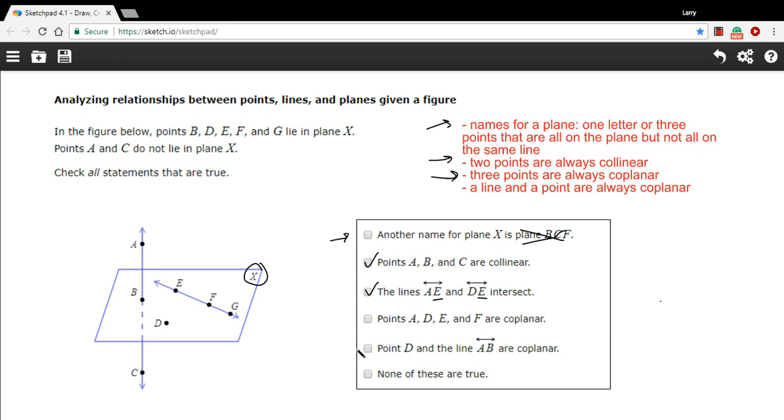All right, next one. It says point D and the line AB are coplanar. So just as three points are always coplanar, a line and a point are always coplanar. So this one is going to be true. One point, one line, there is a plane. It's not plane X, but it's some other plane.